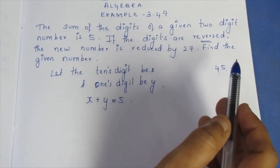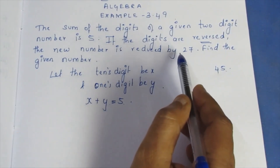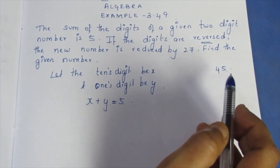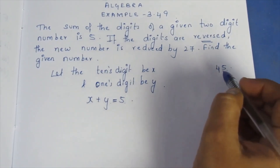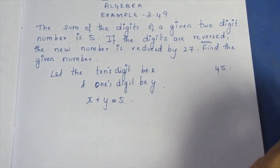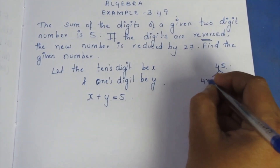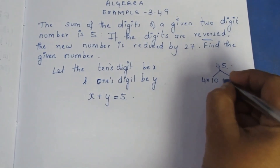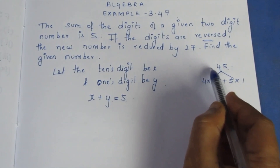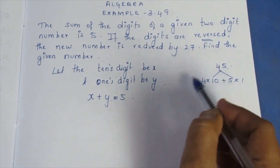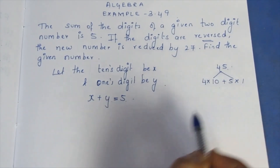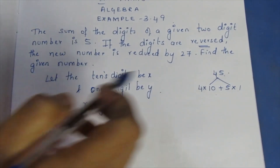If the digits are reversed, the new number is reduced by 27. What does reversing the digits mean? We will use the place value concept: 4 in the tens place means 4×10, and 5 in the ones place means 5×1. Similarly, 6 in the hundreds place is 6×100. So 100 plus 4×10 is how we represent digits by place value.